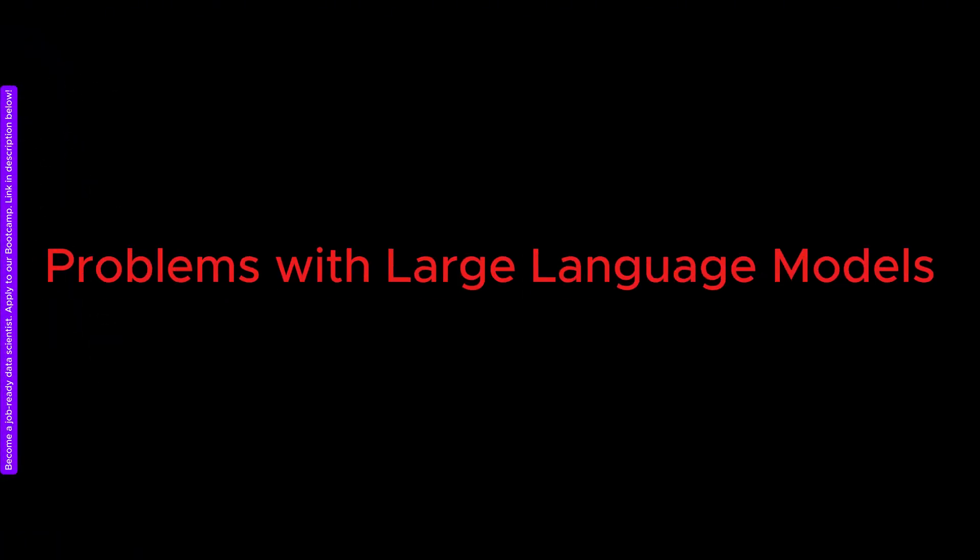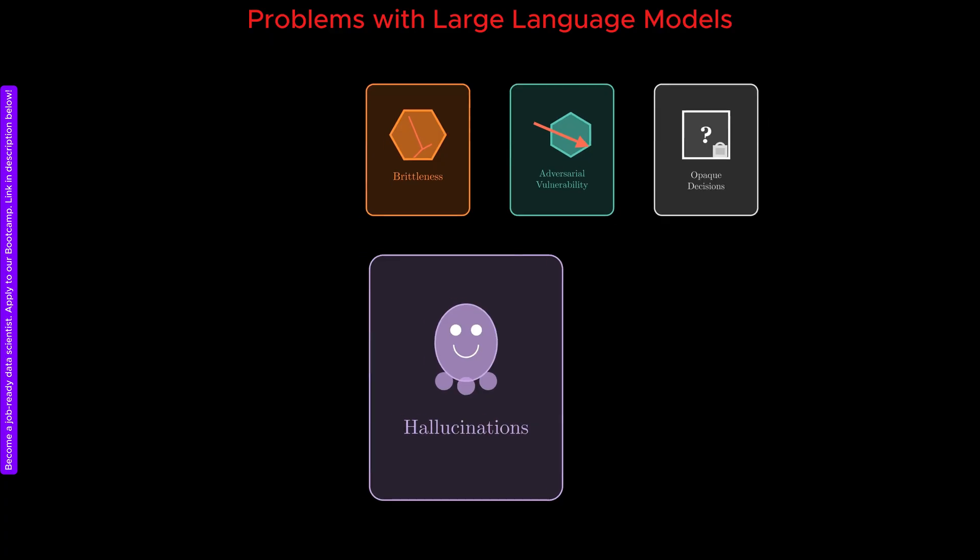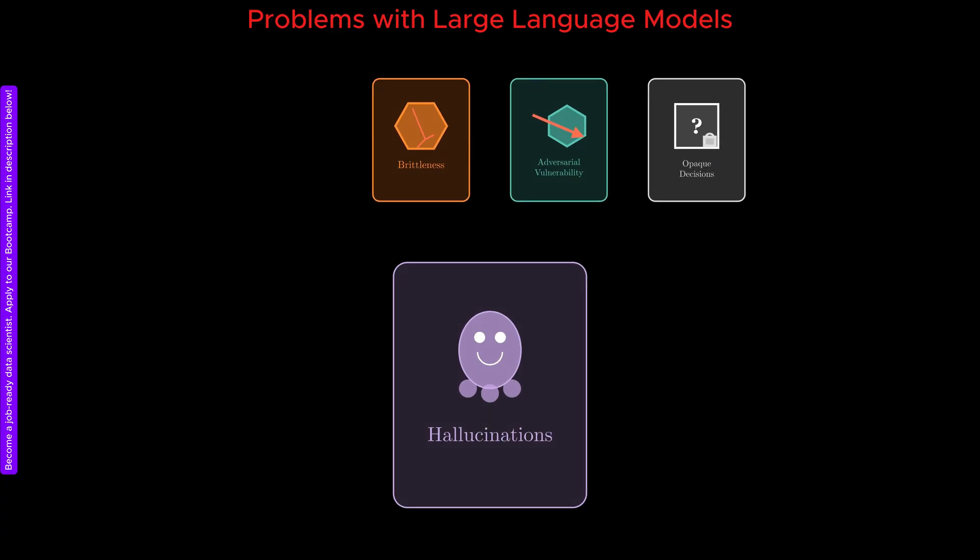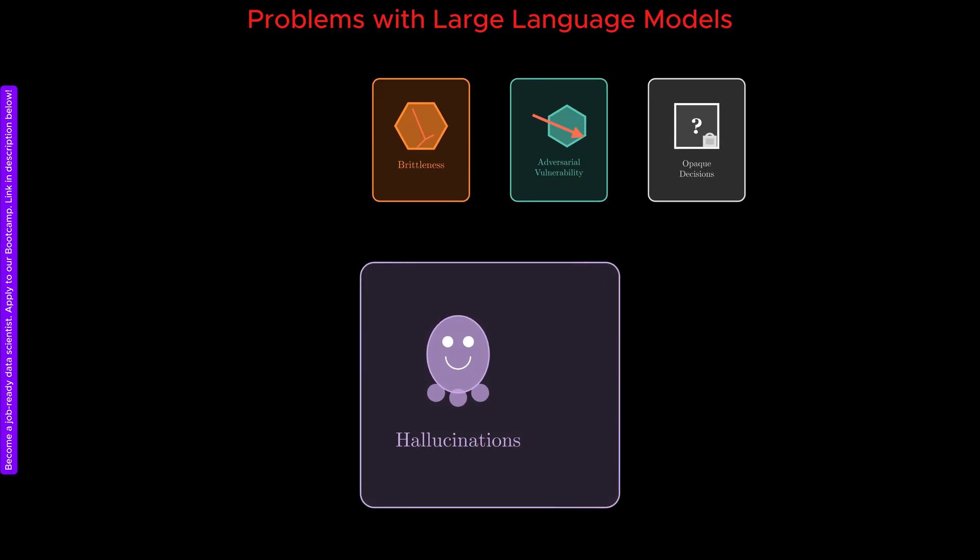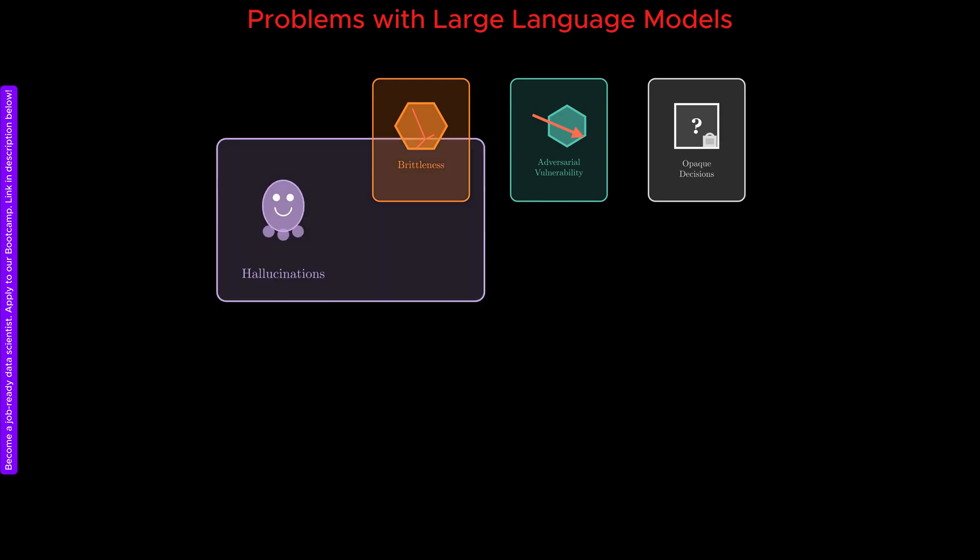Before we discuss how physics can help fix the issues of current AI models, let us briefly enumerate the problems themselves. One of the most widely discussed issues is that large language models can hallucinate. They often produce fluent, confident, and persuasive outputs that are factually incorrect. This behavior undermines trust and makes it difficult to rely on these systems in high-stakes settings.